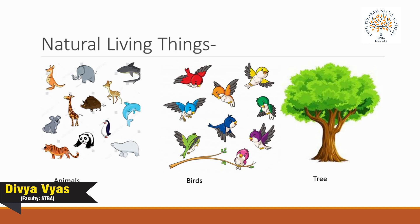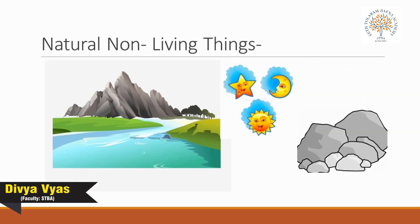Birds, animals, and trees breathe and grow because they have life — they are living things. The sun, stones, and stars do not breathe or grow because they do not have life. They are non-living natural things.